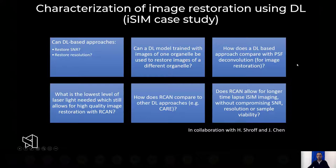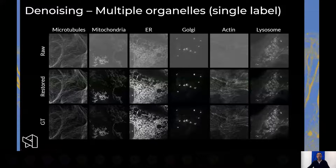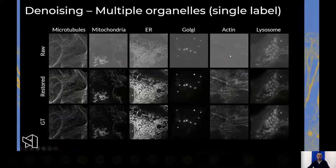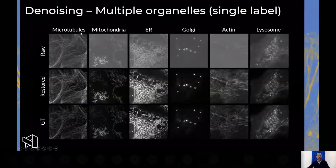The second story is from the ARCAN paper. We wanted to characterize how deep learning models can help with image restoration, and had many questions. First: can we use this model to restore images of multiple organelles? On the bottom is ground truth, the middle is restored, and the raw data is here. We converted these images to the middle using a model trained with ground truth and raw image pairs.